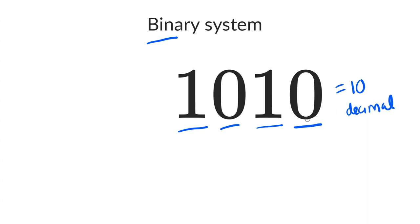This first place, this is the ones place, just like in decimal. Now there's a 0 here, so that means we're going to multiply 0 times 1, get the very exciting value of 0.